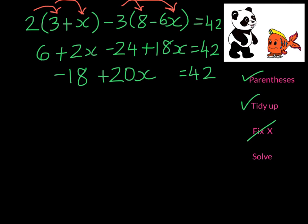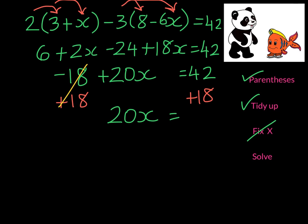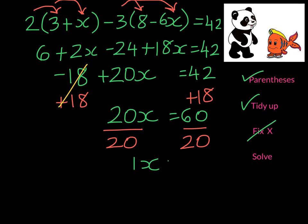So we just proceed to solve. We will add 18 on both sides. On the left-hand side we are left with 20x. On the right-hand side we get 60. At this point we divide by 20 on both sides. So 1x is 3.